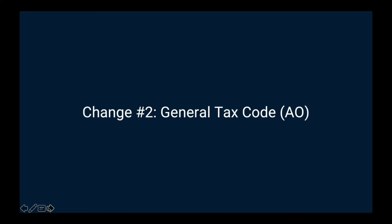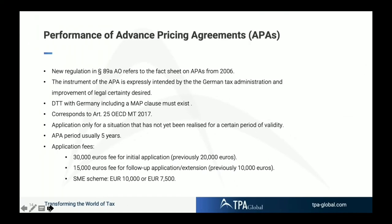Let's go to change number two: the general tax code, the Abgabenordnung in German. Until today, we had only a fact sheet on APAs dated from 2006. Now the legislator has implemented a new paragraph 89a.